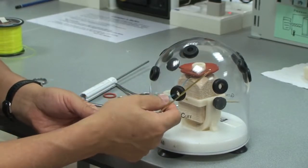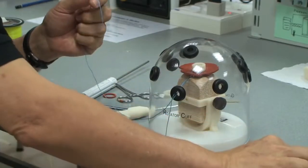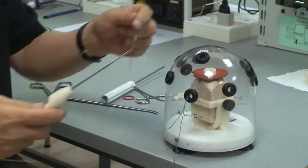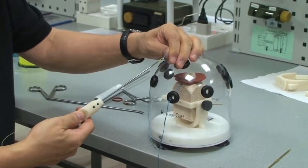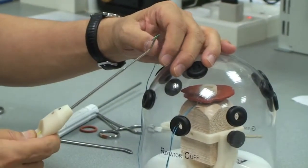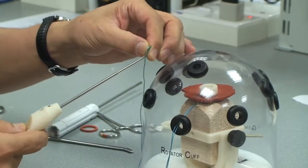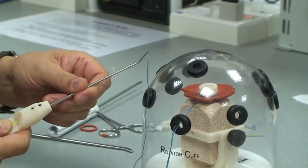I take one limb of the suture and pass it through the loop of the suture passer. Just capture a tiny bit, maybe five millimeters or so.